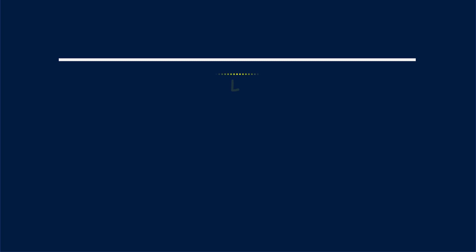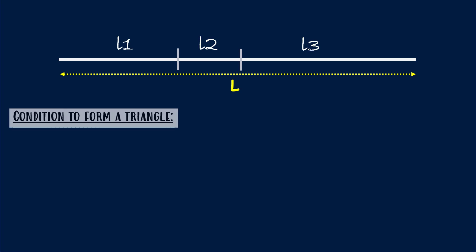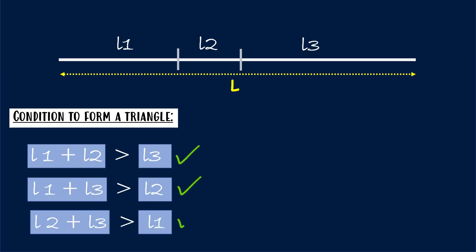Let's break this stick of length L into three pieces of lengths L1, L2, and L3. The condition to form a triangle is that the sum of the lengths of any two pieces should be greater than the third piece's length. So all two-piece combinations must satisfy this condition to form a triangle.